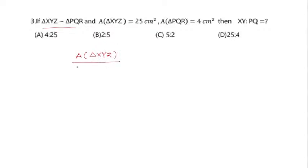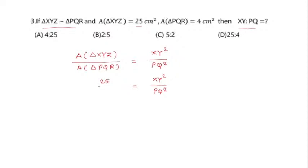The ratio of area of triangle XYZ divided by area of triangle PQR equals XY square divided by PQ square. Substituting, 25 divided by 4 equals XY square divided by PQ square. To find XY divided by PQ, we take the square root of both sides: square root of 25 is 5 and square root of 4 is 2. So XY to PQ equals 5 is to 2, which is option C.